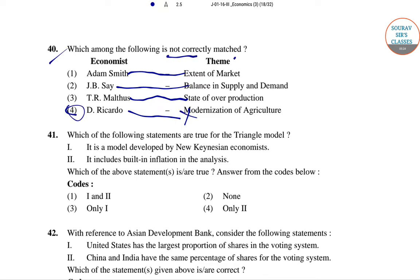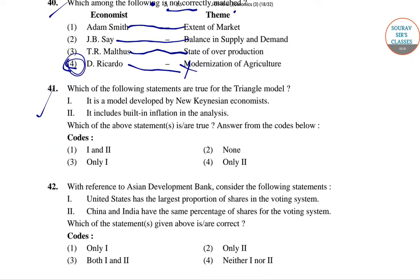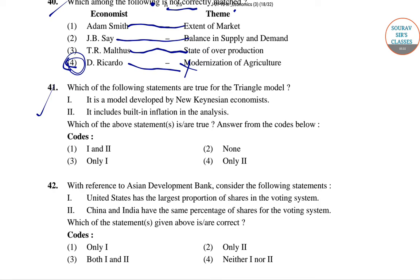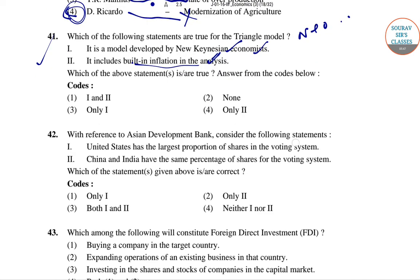Question 41: Which of the following statements are true for the triangle model? It was developed by New Keynesian economist Gordon, and it includes built-in inflation analysis. Both statements are correct — it was developed by New Keynesian economists and includes built-in analysis.